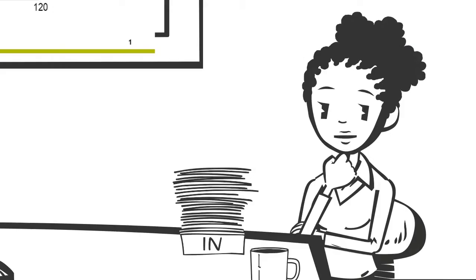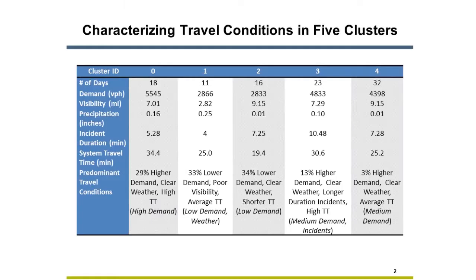Very nice. But this is just sample data. What about the Marine Causeway? Here's what we found looking at Marine Causeway network data: 5 clusters of weekdays that differ based on demand, weather, and incident frequency and severity.